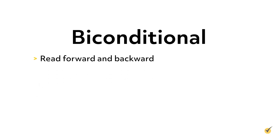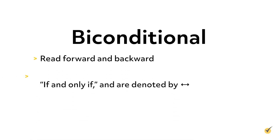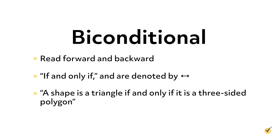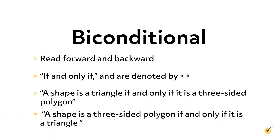The fifth logical operator, the biconditional, can be read forwards and backwards. Biconditionals usually involve the phrase 'if and only if' and are denoted by a two-sided arrow. For example, 'a shape is a triangle if and only if it is a three-sided polygon' is a biconditional statement — we would get the same information reading it backwards: 'a shape is a three-sided polygon if and only if it is a triangle.' Biconditional statements are true whenever both simple statements are true or both are false. If one is true and the other is false, then the biconditional is invalid.